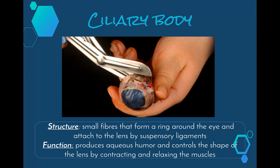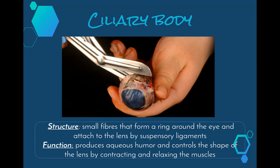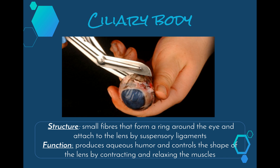Next we have the ciliary body. These are small fibres that form a ring around our eye and attach to the lens by suspensory ligaments. They are quite hard to see because they are quite small. We'll be looking at them later in the topic when we look at accommodation and how the lens is able to change its shape to help us focus on objects near and far away. The function of the ciliary body is to produce aqueous humour and to control the shape of the lens by contracting and relaxing its muscles.